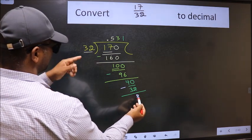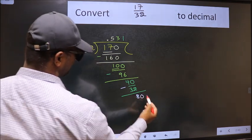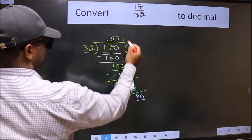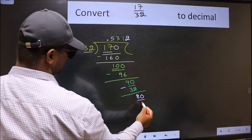8 is smaller than 32. We already have the decimal. So take 0. 80. A number close to 80 in the 32 table is 32 times 2, which is 64.